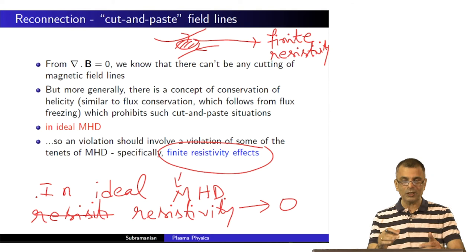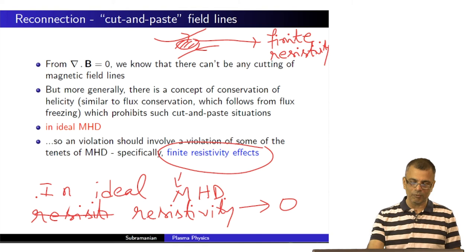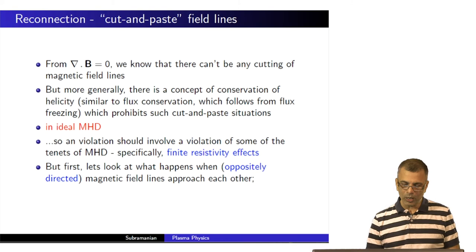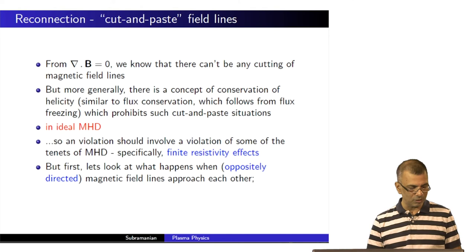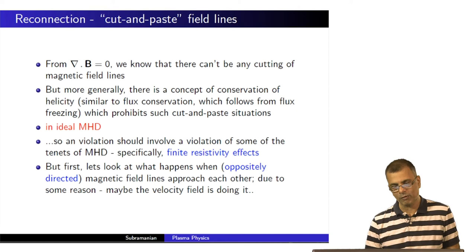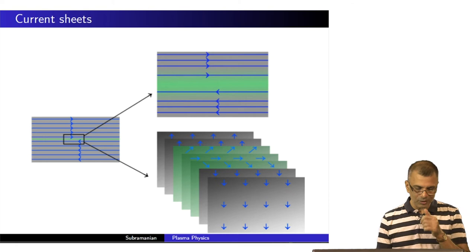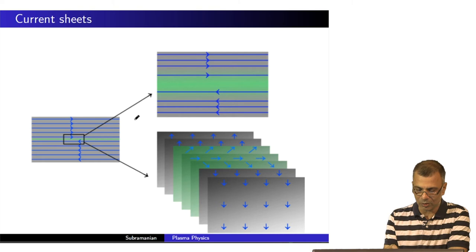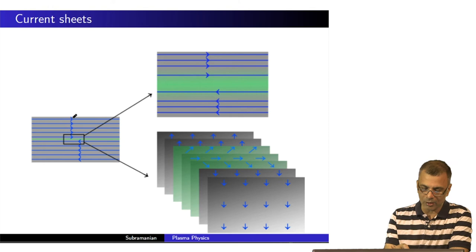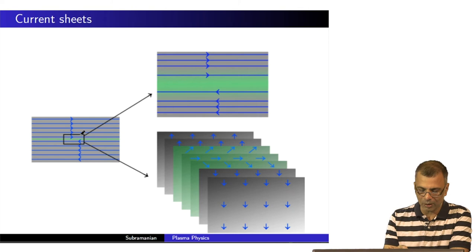Which of the ideal MHD tenets is violated? Well, finite resistivity effects are often invoked. But first, let us look at what happens when oppositely directed magnetic fields approach each other. Due to some reason — maybe the velocity field is doing it — what happens is: this is a cartoon of oppositely directed field lines. The blue lines are the magnetic field lines, directed this way out here and directed that way out there. They close back at infinity somewhere. They are approaching each other and something is happening where this green region is — this is what's called a current sheet.